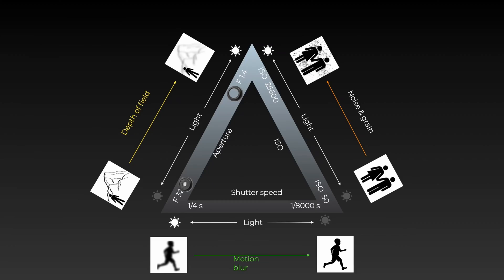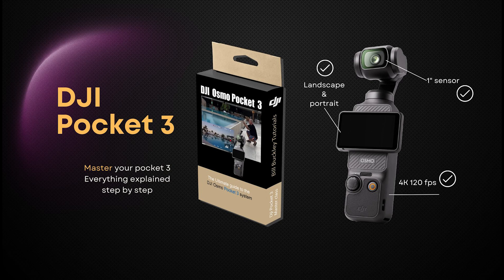So EV is a tool you can use to increase or decrease exposure to lighten or darken your image beyond what the camera thinks is the best value. Now that we understand the basic principles, let's take a look at using EV in real world situations.